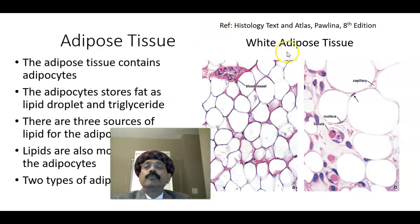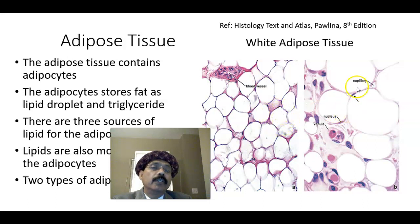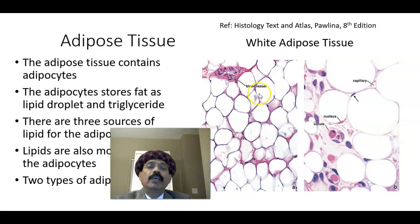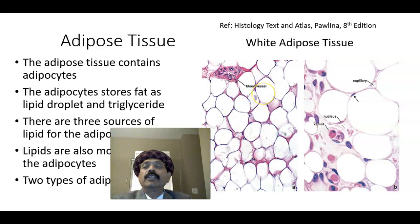The adipose tissue contains adipocytes. These are the adipocytes — here shown in higher magnification. The adipocyte stores fat as lipid droplets and triglycerides.